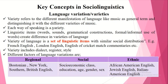A variety of language is a set of linguistic items with similar social distribution — for example, French English, London English, English for cricket match countries, etc. Variety includes dialect, register, and style. Different factors of language variation are regional, social, and ethnic. In regional varieties we have New York and British English. Social factors include socioeconomic class, education, age, gender, and sex. Ethnic varieties include African American English, Jewish English, Italian American English.